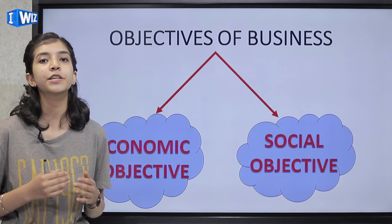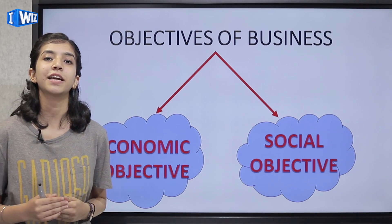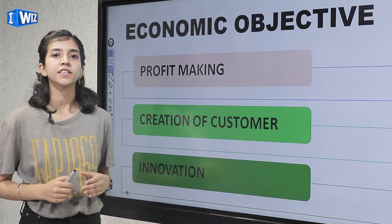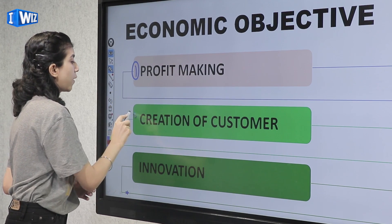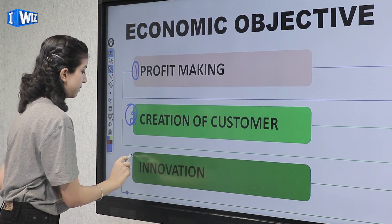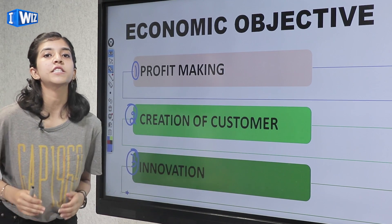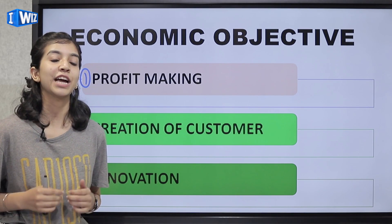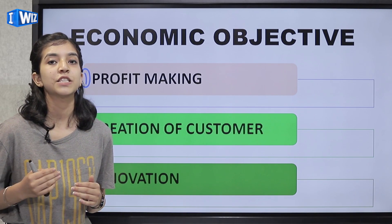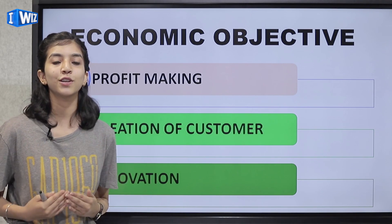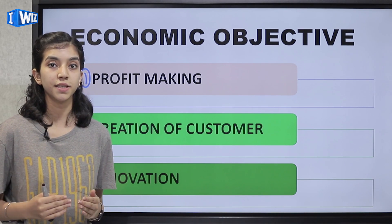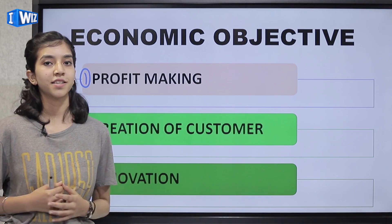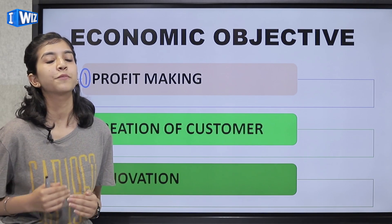We come towards the types of economic objectives. There are broadly three types of economic objectives. The first one is profit making. Profit is a key feature of business — since profit is the soul of a business, it is really important to earn it consistently and regularly. Profit ke bohat sare uses hote hai, wo mein aapko aage bataaunga.